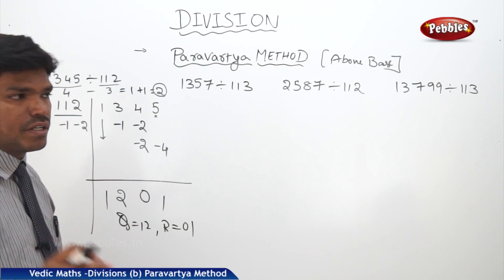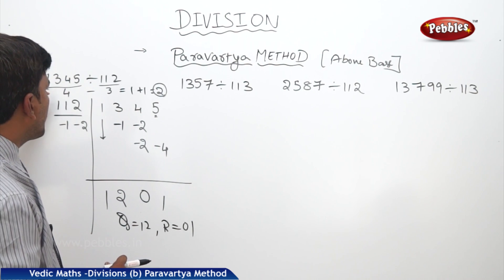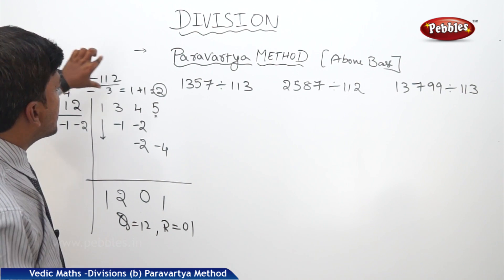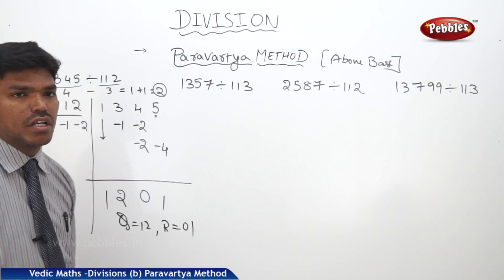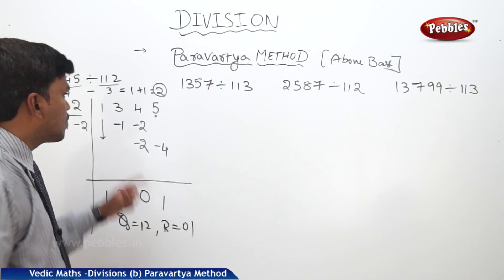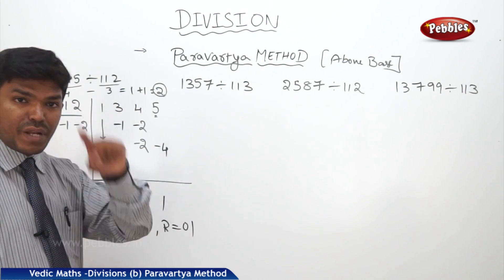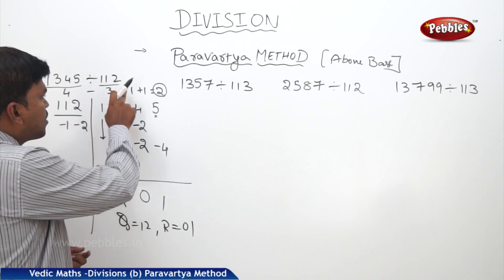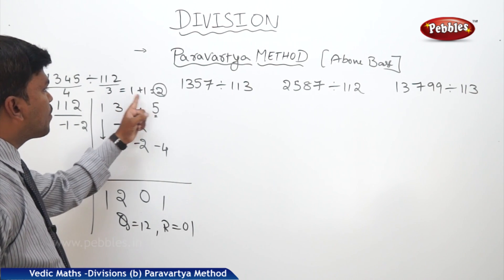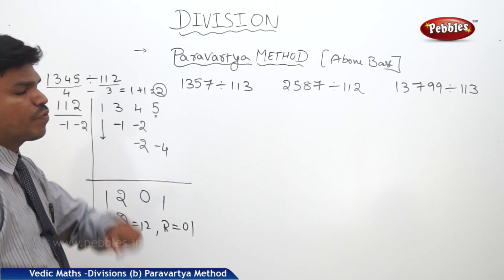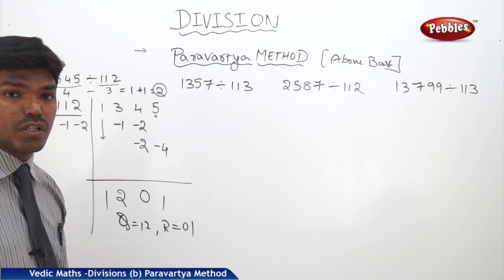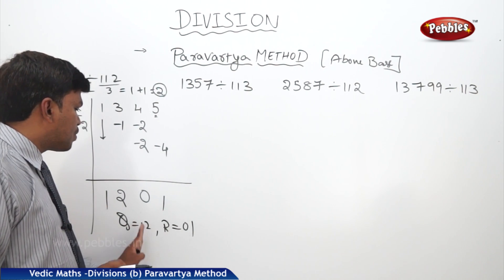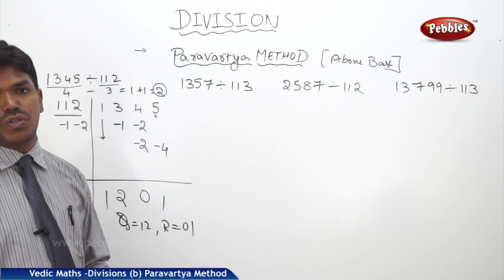So the quotient has 2 digits from the left. That means the quotient is 12 and the remainder is 01. The rule is: take the difference of the number of digits in the dividend and the number of digits in the divisor, then add 1 — that gives the number of quotient digits from the left.